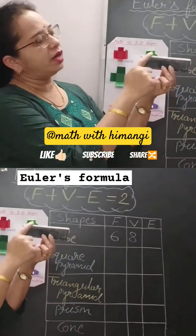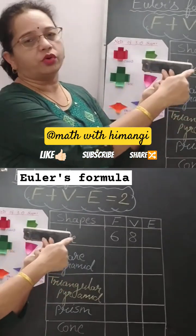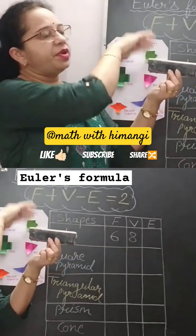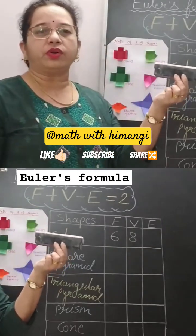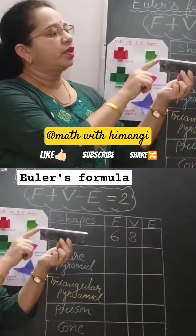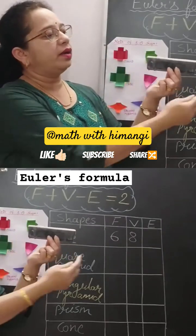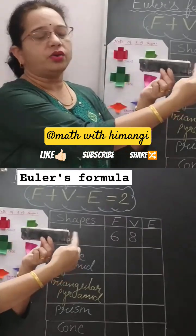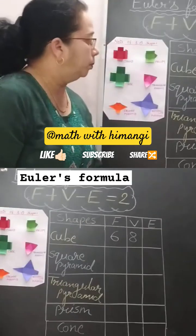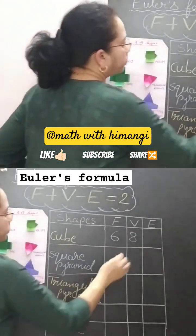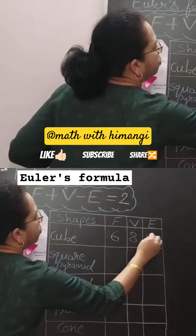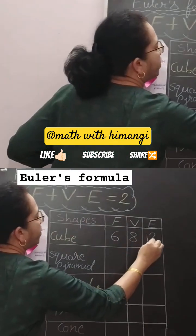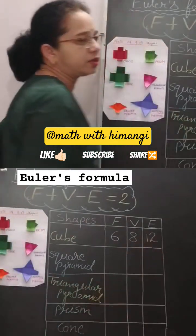4 edges on the front: 1, 2, 3, 4, similarly 4 at the back — 4 plus 4 is 8 — and then 9, 10, 11, 12. So a cube or cuboid has 12 edges.